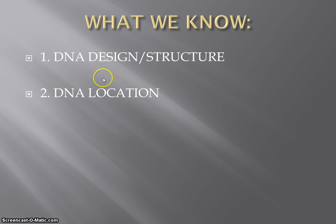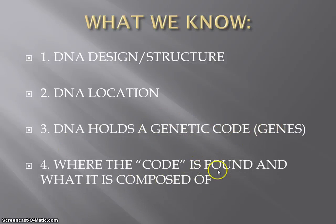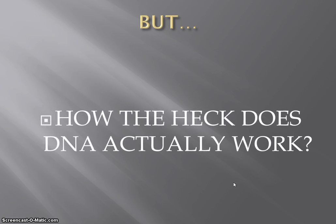We know exactly that it's a double helix, we know that we find it in the nucleus, we know exactly that it does hold the genetic code, and we even know where that code is found — remember in our bases, A's, T's, C's, and G's. But big but — how the heck does it actually work? How do those bases and those code instructions tell me to have blue eyes, or tell me to have a butt chin, or tell me to have cystic fibrosis?